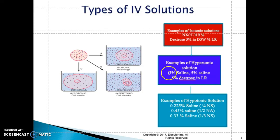The next example is hypertonic solutions. As you can see, examples include 3% saline, 5% saline, and 5% dextrose and lactated Ringer's. With hypertonic solutions, you need to know which situation you would hang one, because with a hypertonic solution, that is when the cell shrinks.